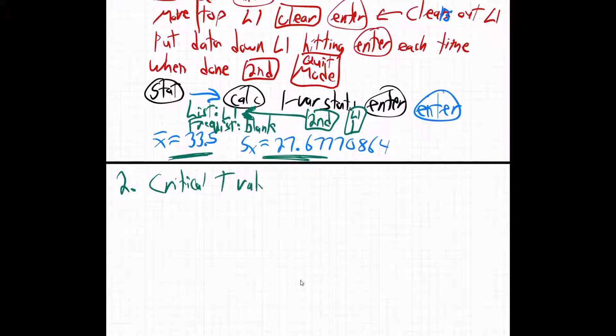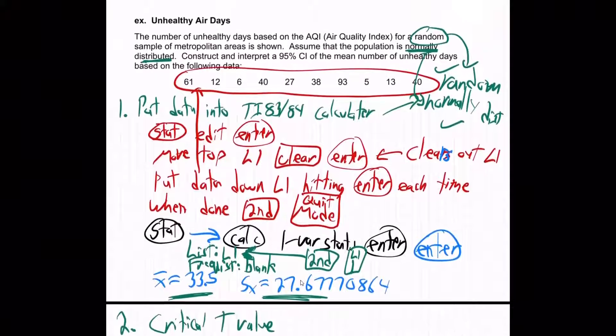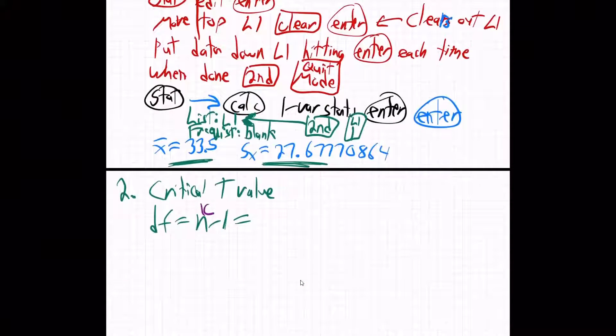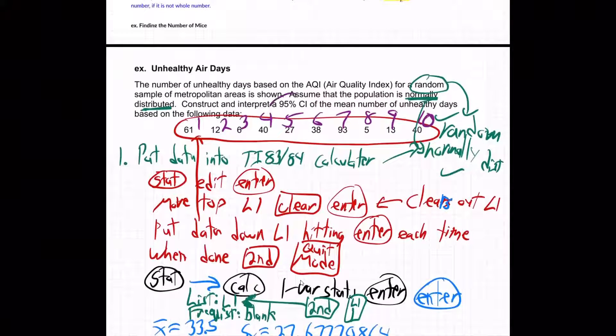Critical T value. So the degrees of freedom, remember, is N minus one. So what is N? Well, it's the number of data values, right? One, two, three, four, five, six, seven, eight, nine, ten. We had 10 data values in our list. Everybody see what I did there? I just counted them, right? 10 data values. So I just go ahead and, okay, this is then 10 minus one, nine. So degrees of freedom are nine. And what's our confidence level? 95%.